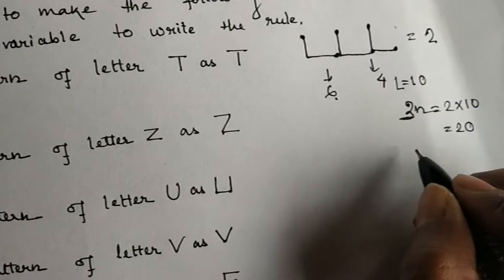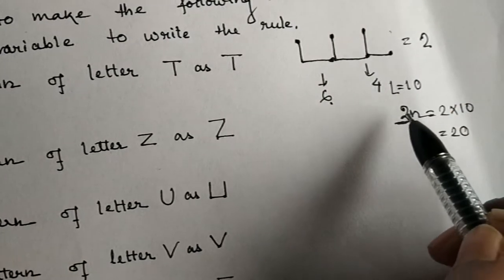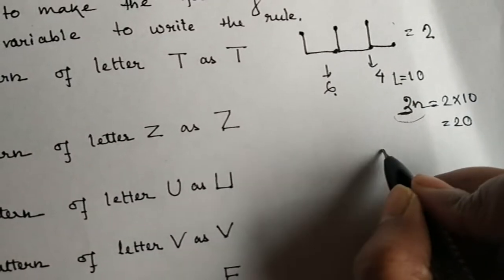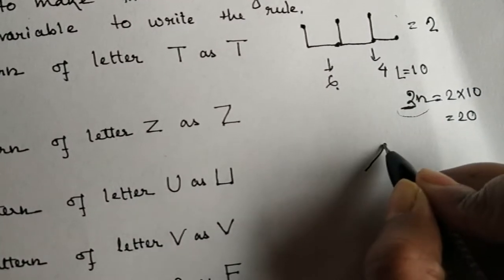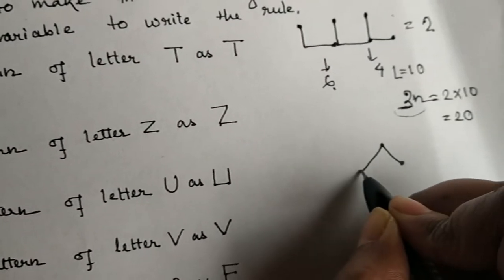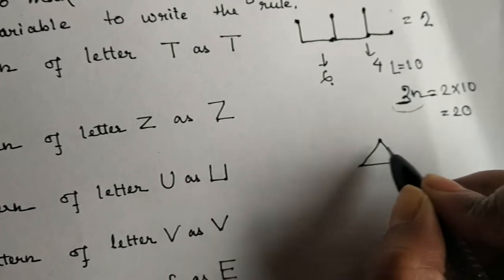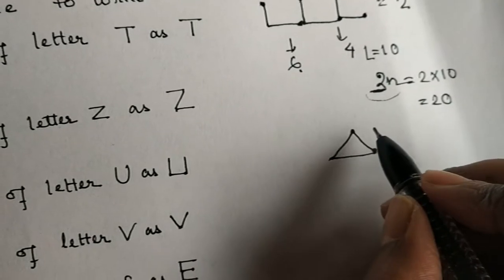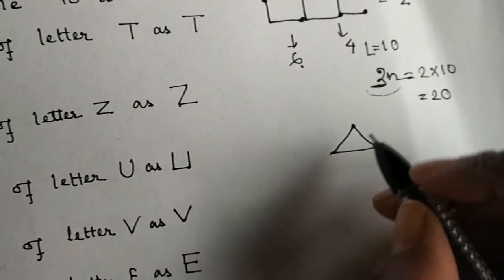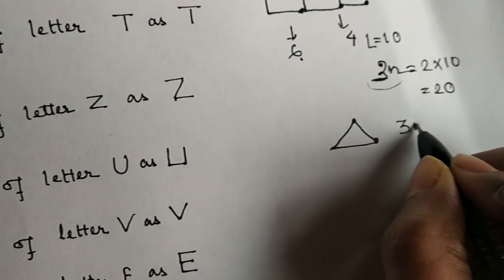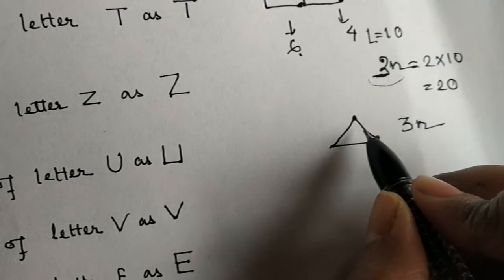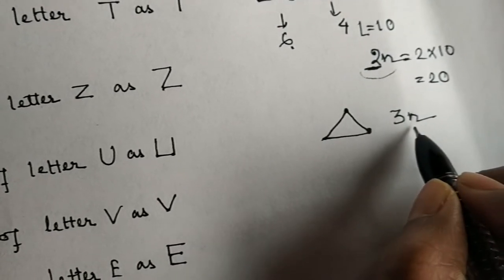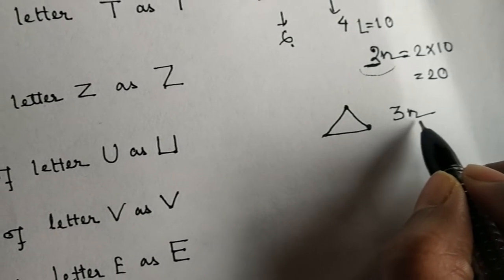So this 2N is for only the letter L. Now, if I take a triangle — 3 mastics are used to make 1 triangle. So what will be the rule here? It will be 3N. Because 3 is the number of mastics used in one triangle, and N is the number of triangles we need to form.